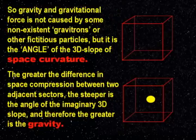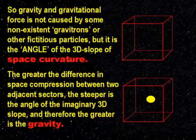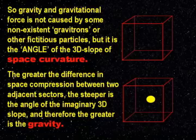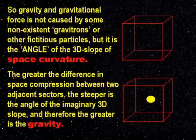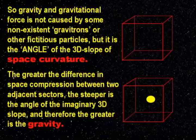So gravity and gravitational force is not caused by some non-existent gravitons or other fictitious particles, but it is the angle of the 3D slope of space curvature. The greater the difference in space compression between two adjacent sectors, the steeper is the angle of the imaginary 3D slope, and therefore the greater is the gravity.